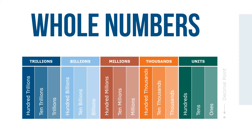This figure illustrates the 15 places and 5 groups of the decimal number system. Note that our system is made up of groups of three places, separated by commas, each with its own name. Whole numbers start at the understood decimal point and increase in value from right to left.